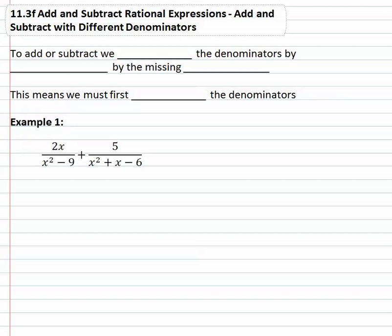In this video, we're going to add and subtract rational expressions with different denominators. To add or subtract, we must build up the denominators to a common denominator by multiplying by the missing factors — that's just from regular adding and subtracting of fractions. However, with rational expressions, in order to multiply by missing factors, we must first identify and factor the denominators.